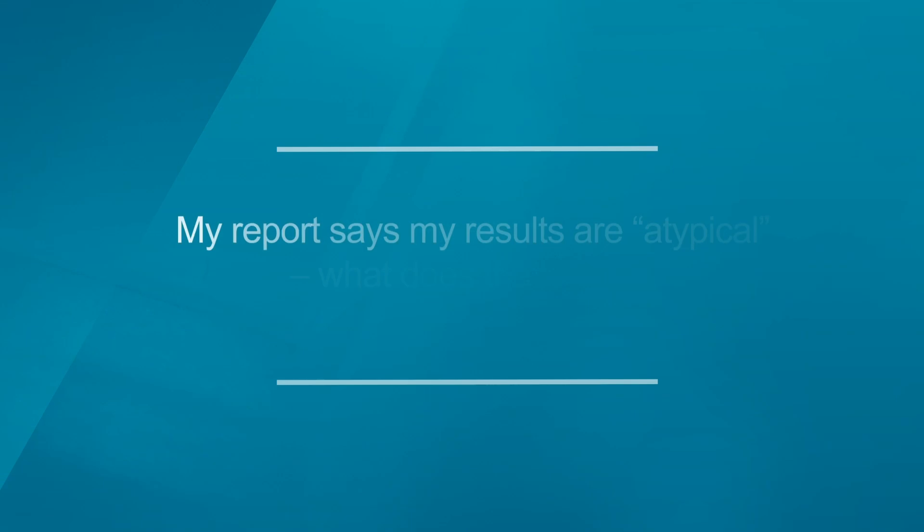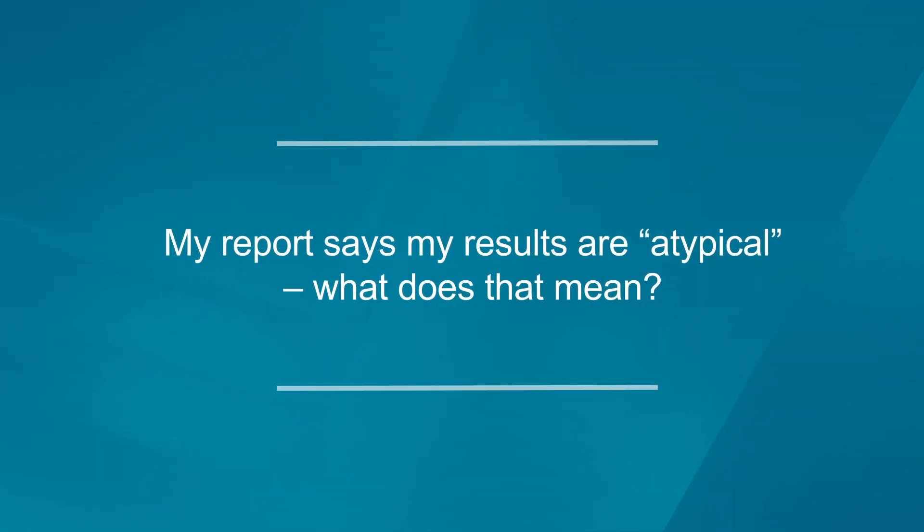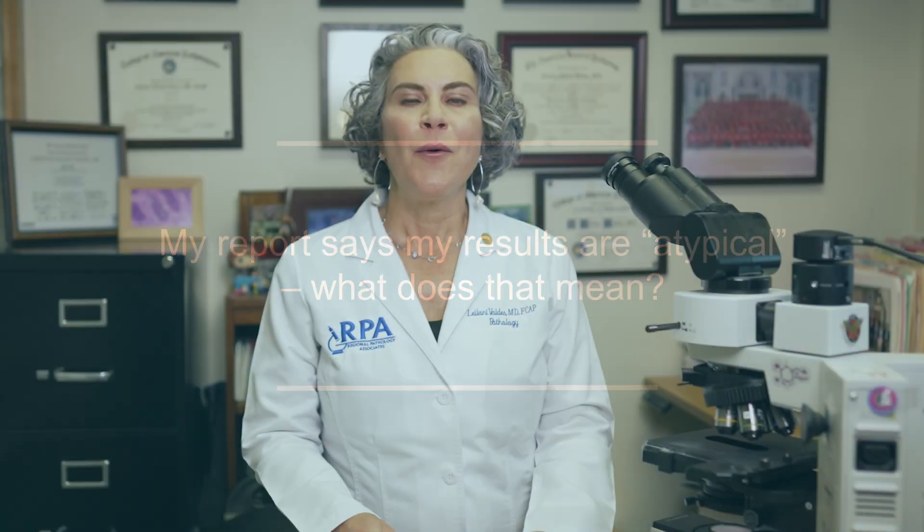So here's a question: I had a skin biopsy and my results came back atypical — what does that mean? Well, atypical is a very general term that we use in medicine to describe when something is just not quite right. What's important to remember is that when you see a diagnosis of atypical, it could be anything in a broad spectrum, from a more serious diagnosis meaning cancer, to a less serious incidental finding that's just not normal in that tissue type.